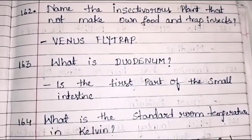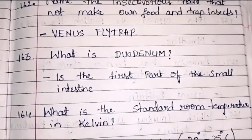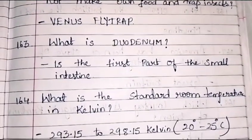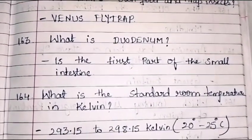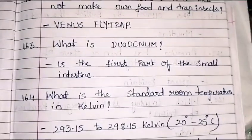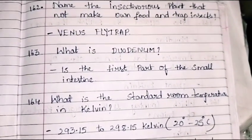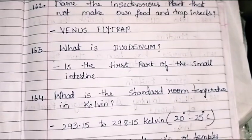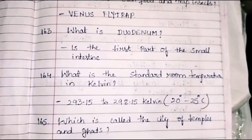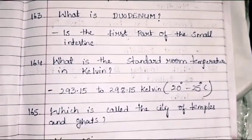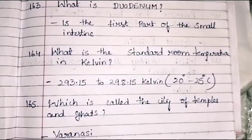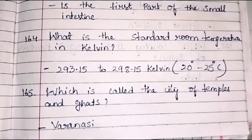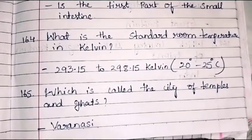What is the standard room temperature in Kelvin? The standard room temperature is 293.15 to 298.15 Kelvin. In degrees Celsius, it is 20 degrees to 25 degrees Celsius.